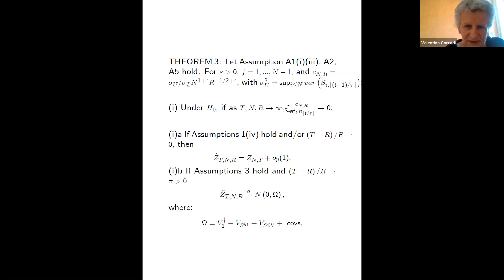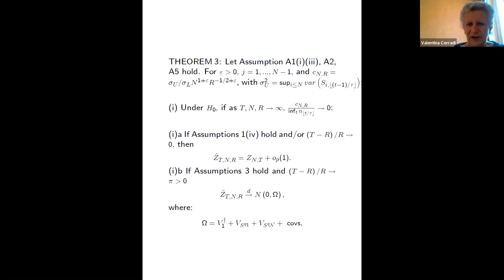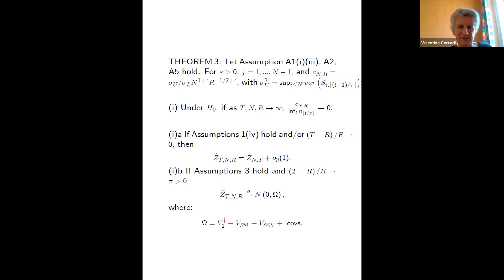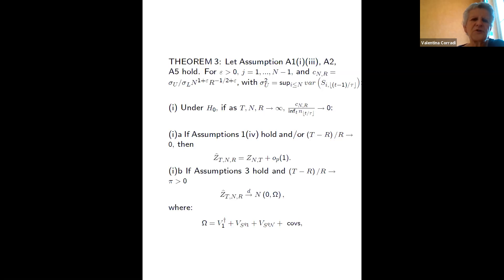The condition on trimming is very mild — basically just meaning we are not trimming away everything. Our key result: if we have weak cross-sectional correlation in the sorting variable and sorting error, and we use more observations for estimation than for testing, then the trimmed feasible statistic is asymptotically equivalent to the statistic we would have without estimation error. Once we trim, we can ignore the effect of trimming in the presence of weak correlation in the sorting variable.